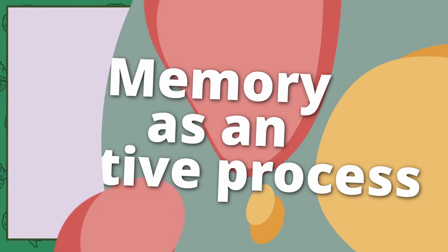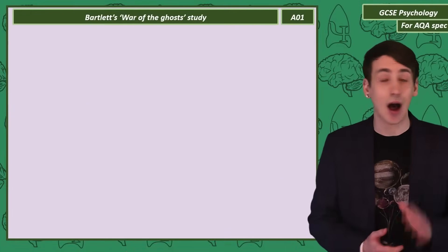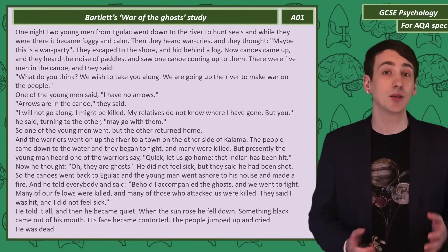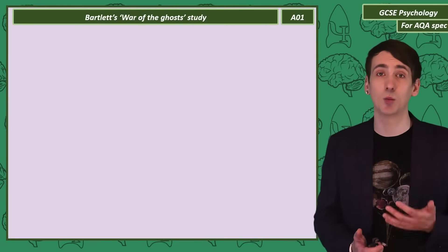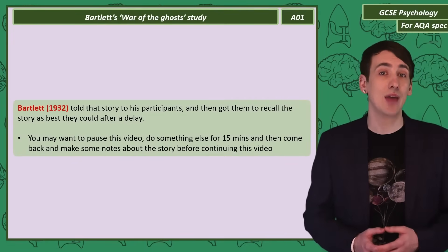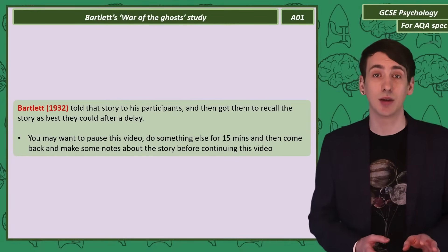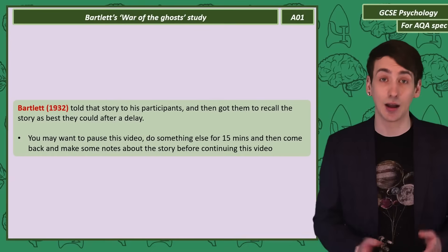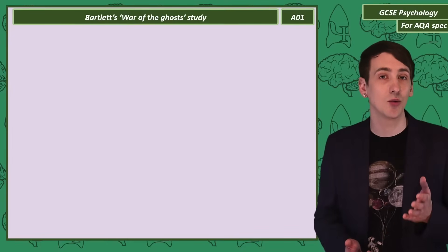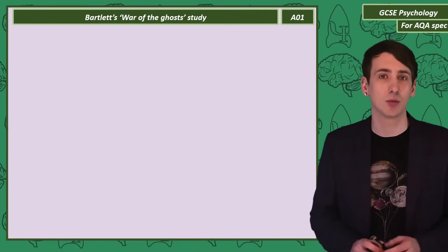Memory as an active process. Bartlett used a story — the War of the Ghosts — originally in 1932. He told the story to his participants and then got them to recall it back to him after gaps in time. If you read the story and wait 15 minutes, you can try recalling the key facts yourself with some bullet point notes.